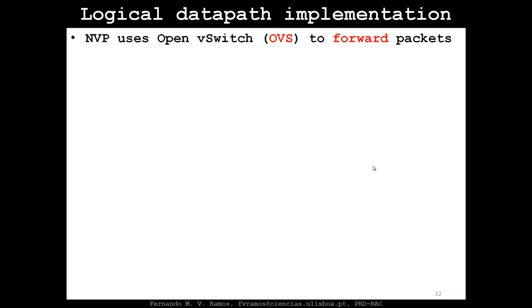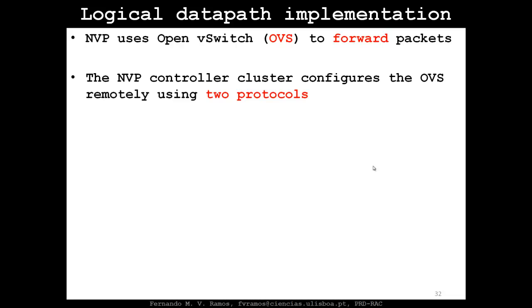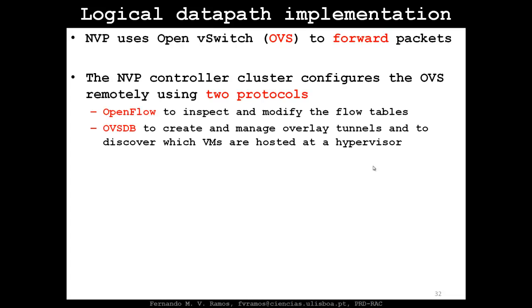The logical datapath implementation uses OpenVSwitch to forward packets. The NVP controller cluster configures OVS remotely using two protocols: OpenFlow, which inspects and modifies flow tables, and OVSDB, used in parallel to create and manage the overlay tunnels — since OpenFlow doesn't support setting up tunnels. OVSDB also discovers which VMs are hosted at a hypervisor. OpenFlow changes the control plane directly via flow tables, while OVSDB is more of a configuration and management protocol.